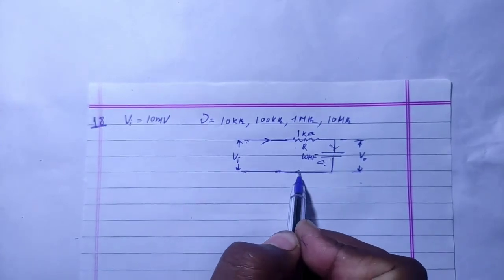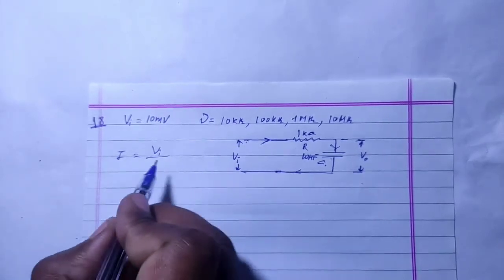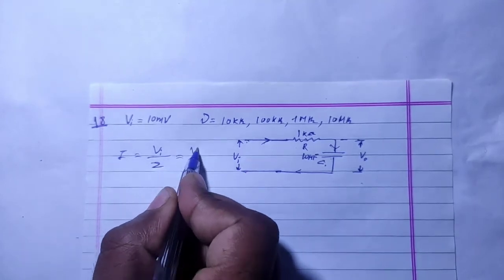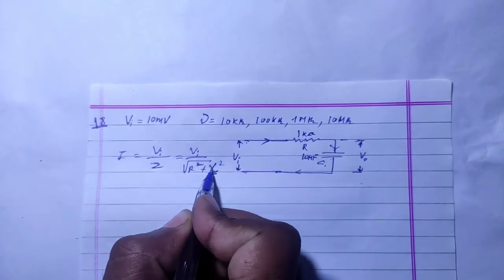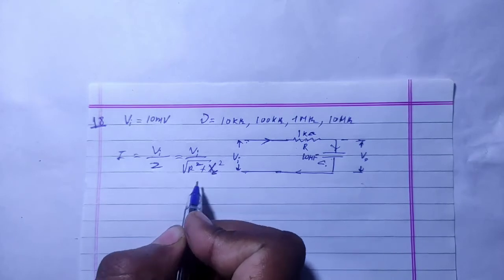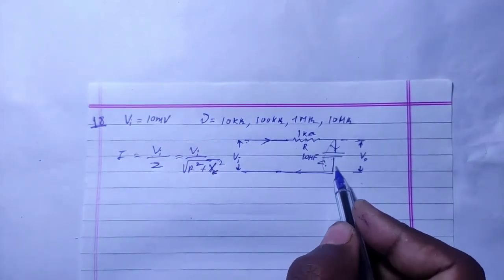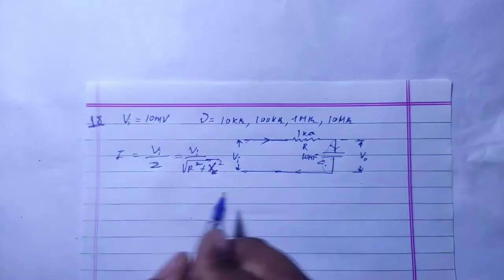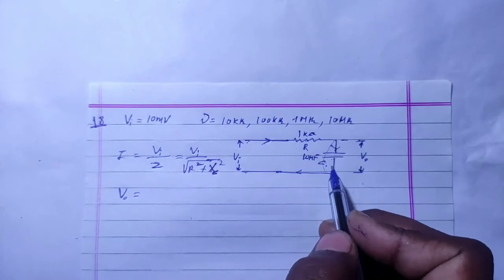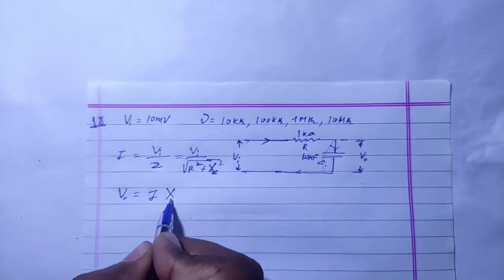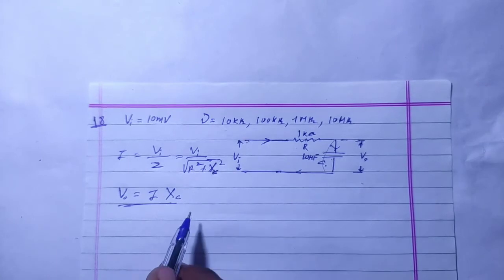The current flows from higher potential to lower potential. Current I is equal to V input divided by the impedance Z. The impedance Z equals the square root of R squared plus XC squared, where XL is much less than XC. The output potential equals current I multiplied by the capacitive reactance XC.